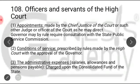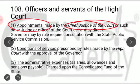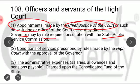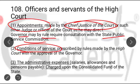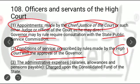Section 108 deals with officers and servants of the High Court. The officers or servants of J&K High Court are appointed by the Chief Justice of the High Court of Jammu and Kashmir or any other judge or officer given authority by the Chief Justice. Some posts require consultation with the State Public Service Commission — the governor consults after making laws, and after consultation with JKPSC, examinations are conducted and recruits are appointed. The conditions of service of officers and servants of the High Court are governed by rules made by the High Court itself, with the approval of the governor.